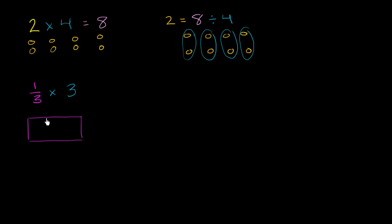And let me shade in 1 third of it. So that's 1 third. We're going to multiply by 3. So we're going to have 3 of these 1 thirds. Or another way of thinking about it, it's going to be 1 third plus another 1 third plus another 1 third. That's our first third, our second third, and our third third.